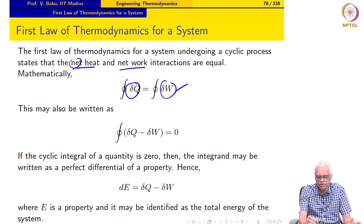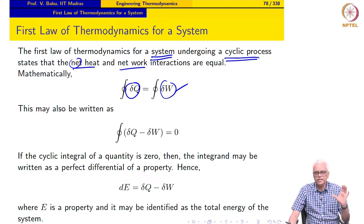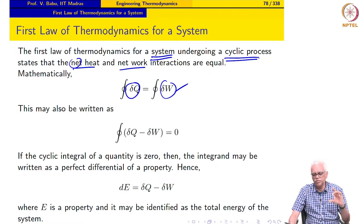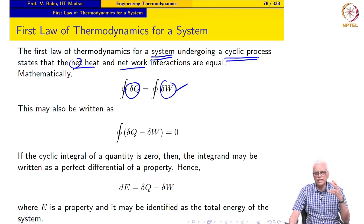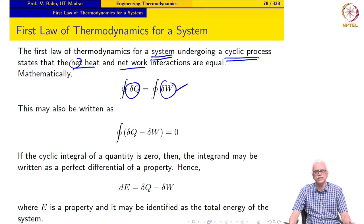The most important thing here is that this must be a system and it must execute a cyclic process — both are very important. The cyclic process is of particular significance in thermodynamics because cyclic processes, by virtue of the fact that they can run forever, can actually result in perpetual motion machines. The laws of thermodynamics take a very close look at systems executing cyclic processes. For non-cyclic processes, there may not be any constraints from the laws of thermodynamics.